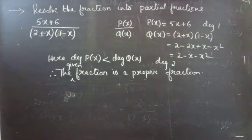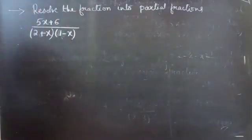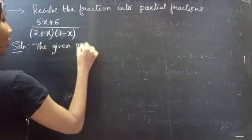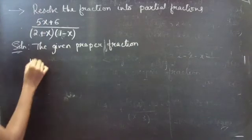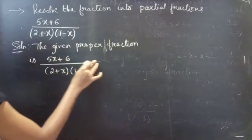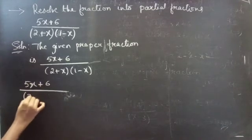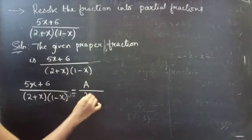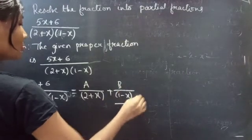We are given a proper fraction, and now we are going to resolve it into partial fractions. The given proper fraction is (5x plus 6) by (2 plus x) into (1 minus x). We can write it as A by (2 plus x) plus B by (1 minus x). Consider this as equation 1.